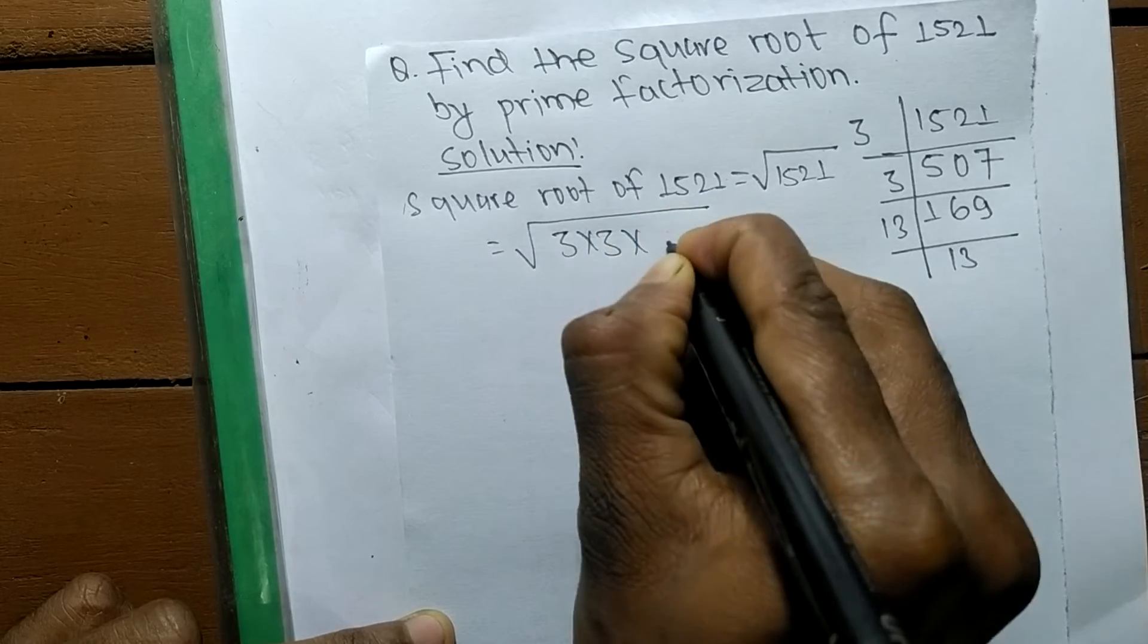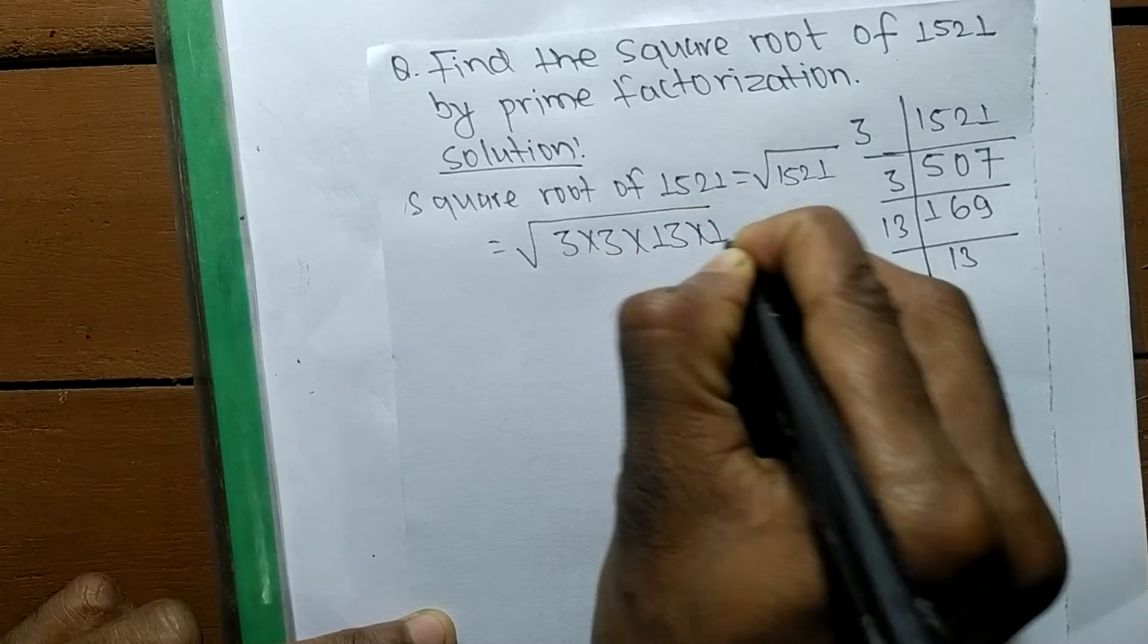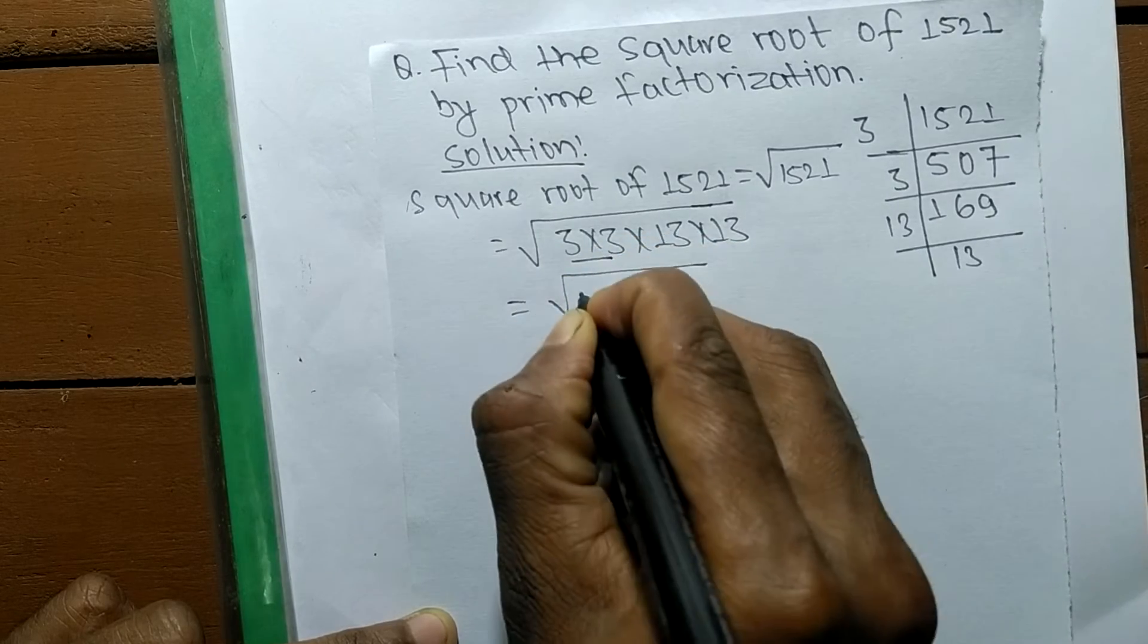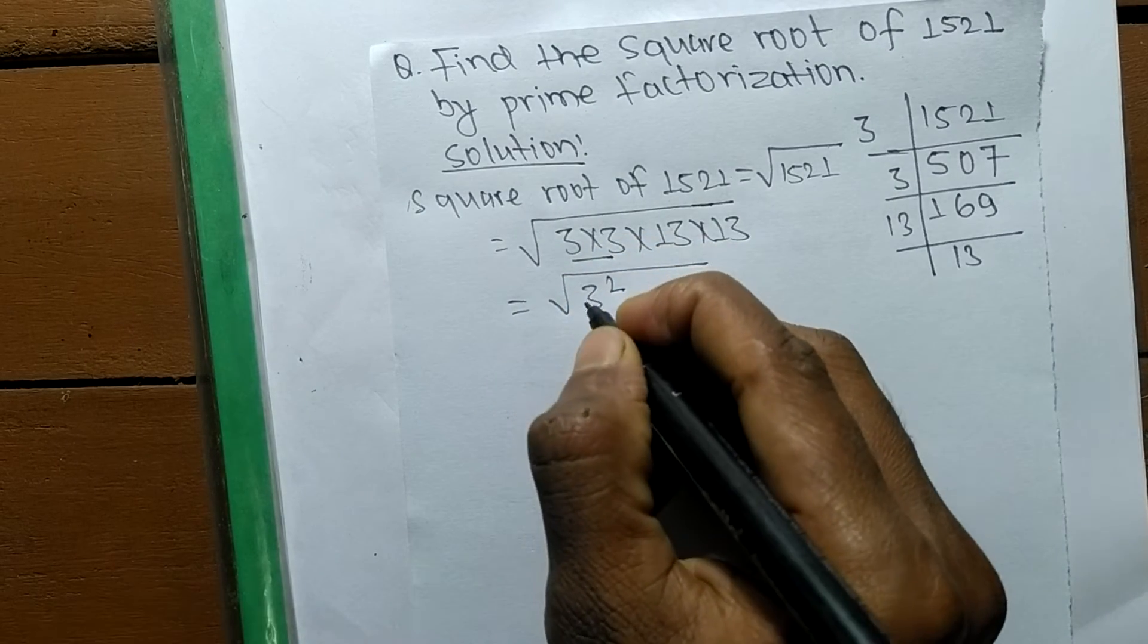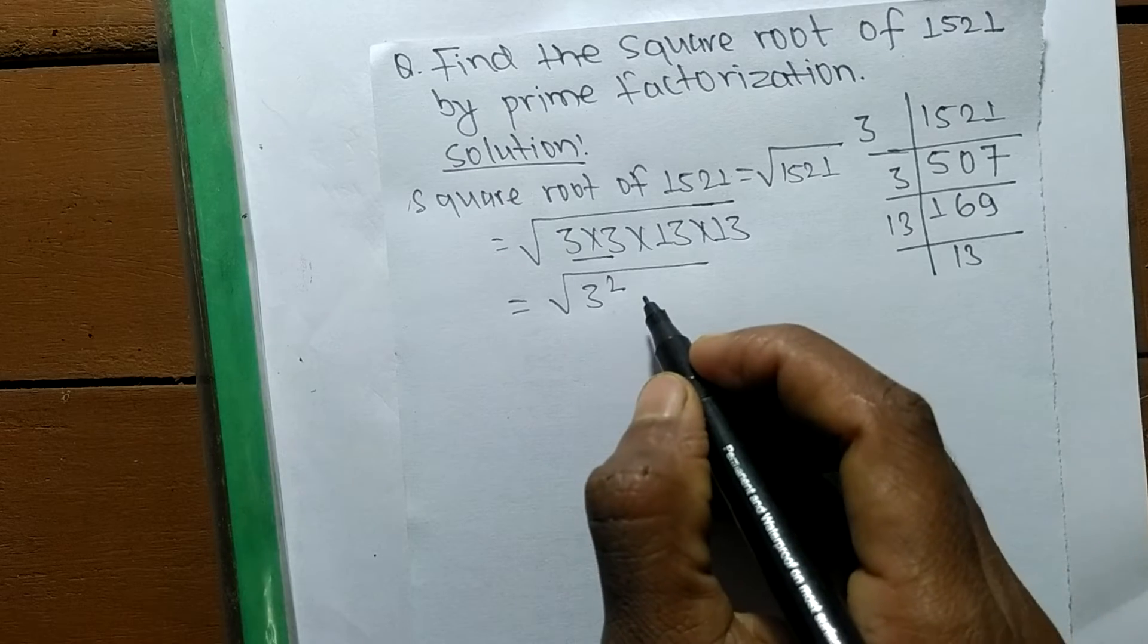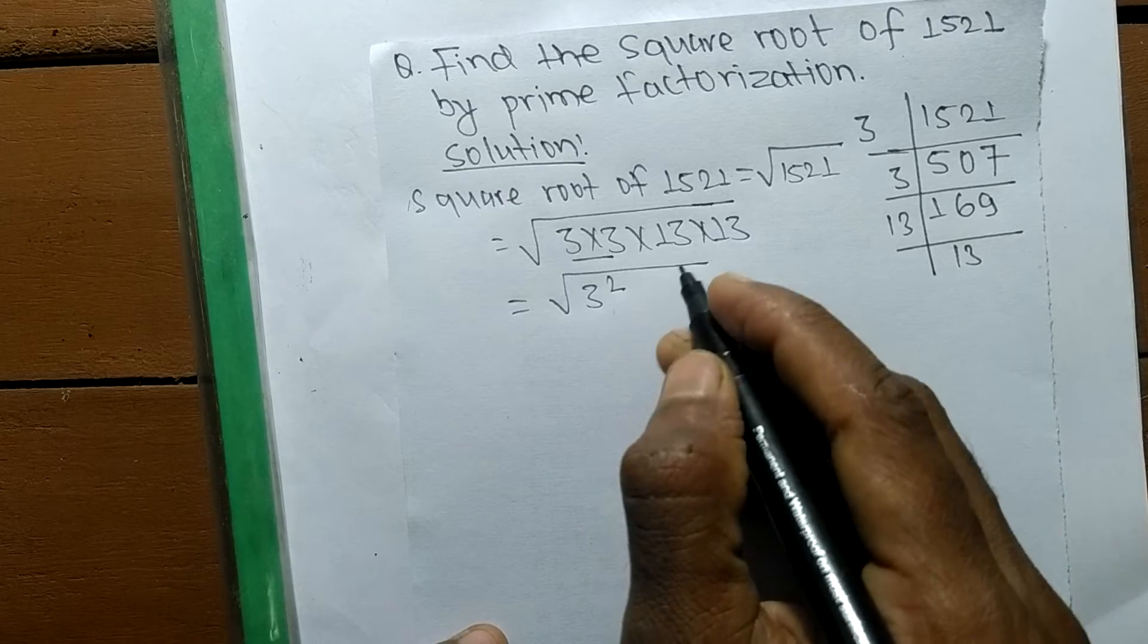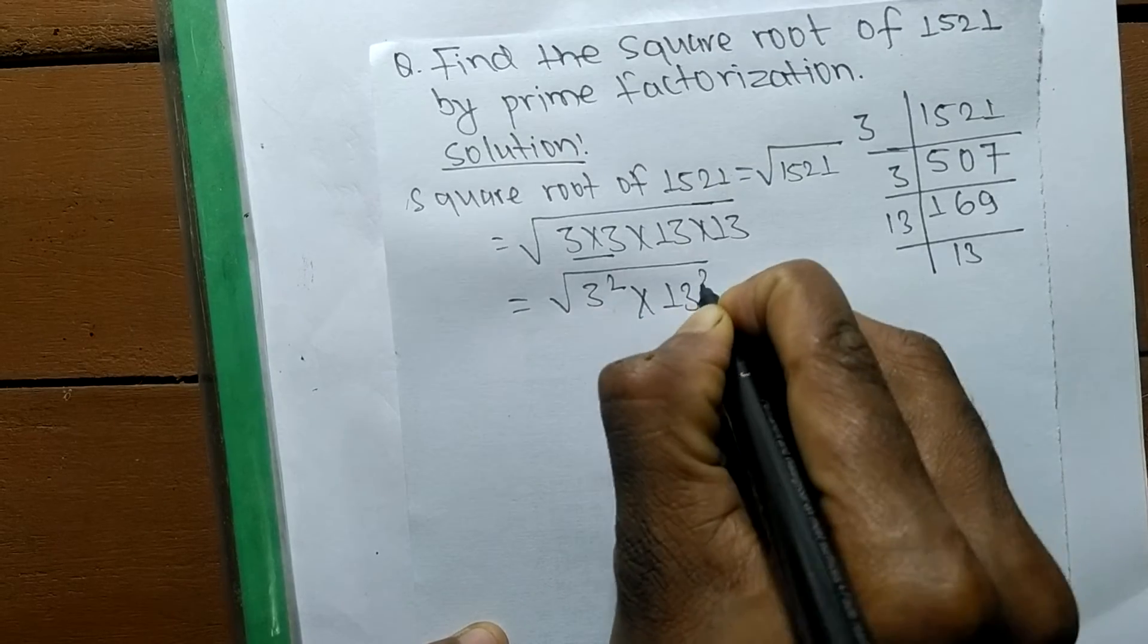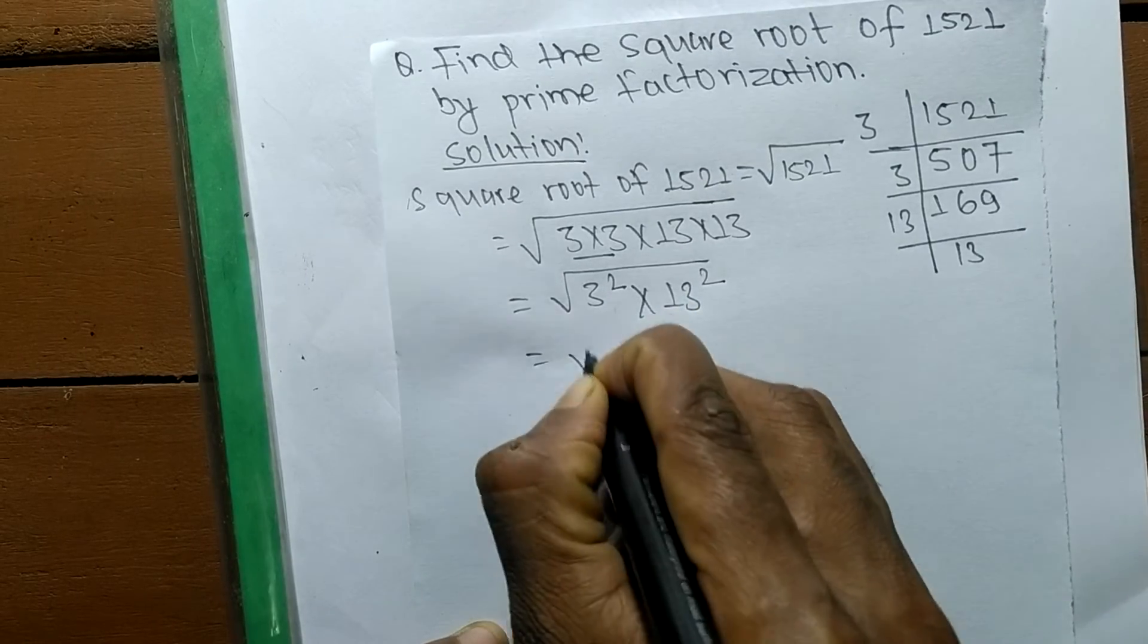3 times 3 means it is 3 squared. We have to now separate these prime factors in a square form. Like as 13 times 13 means it is 13 squared.